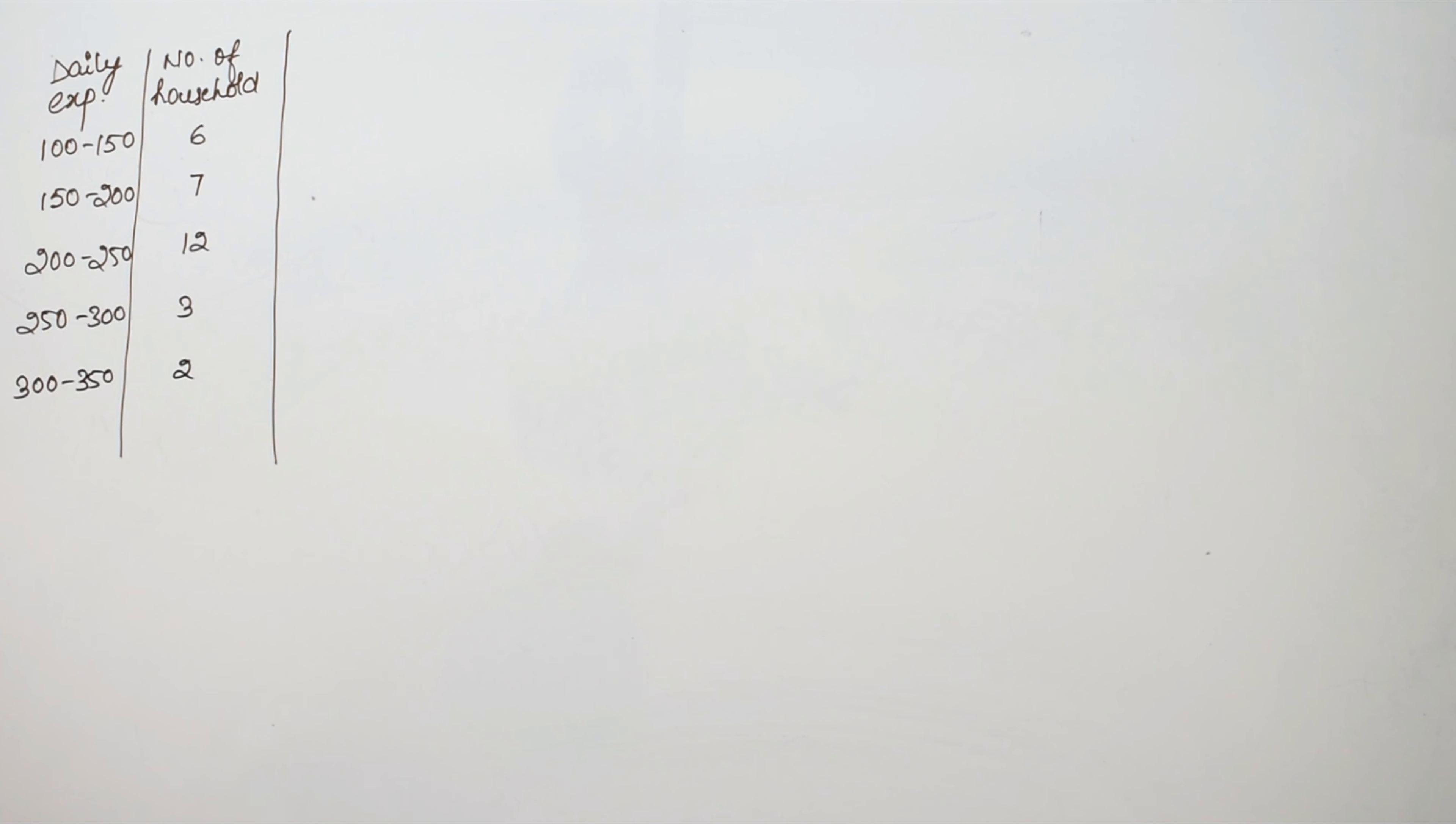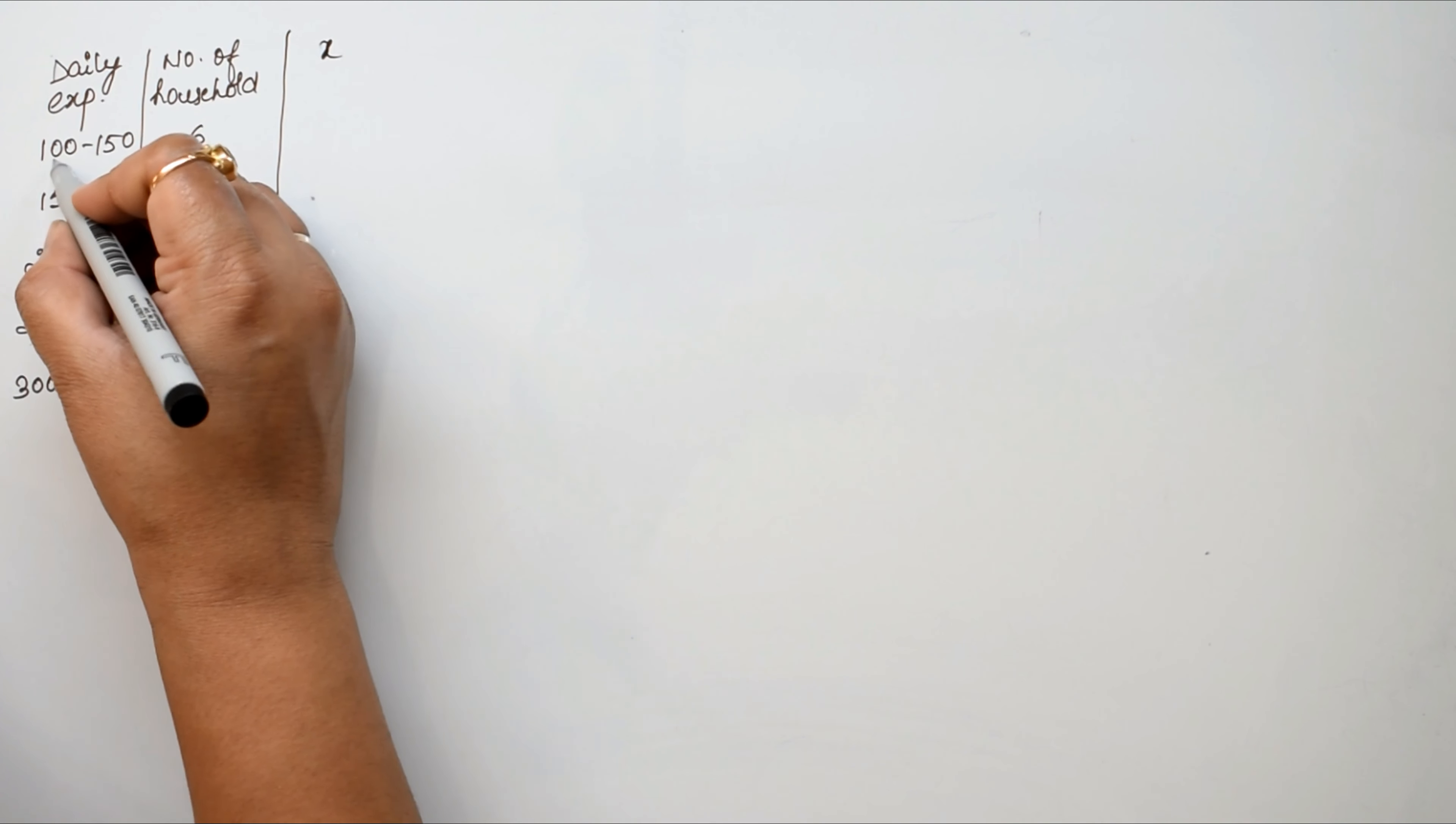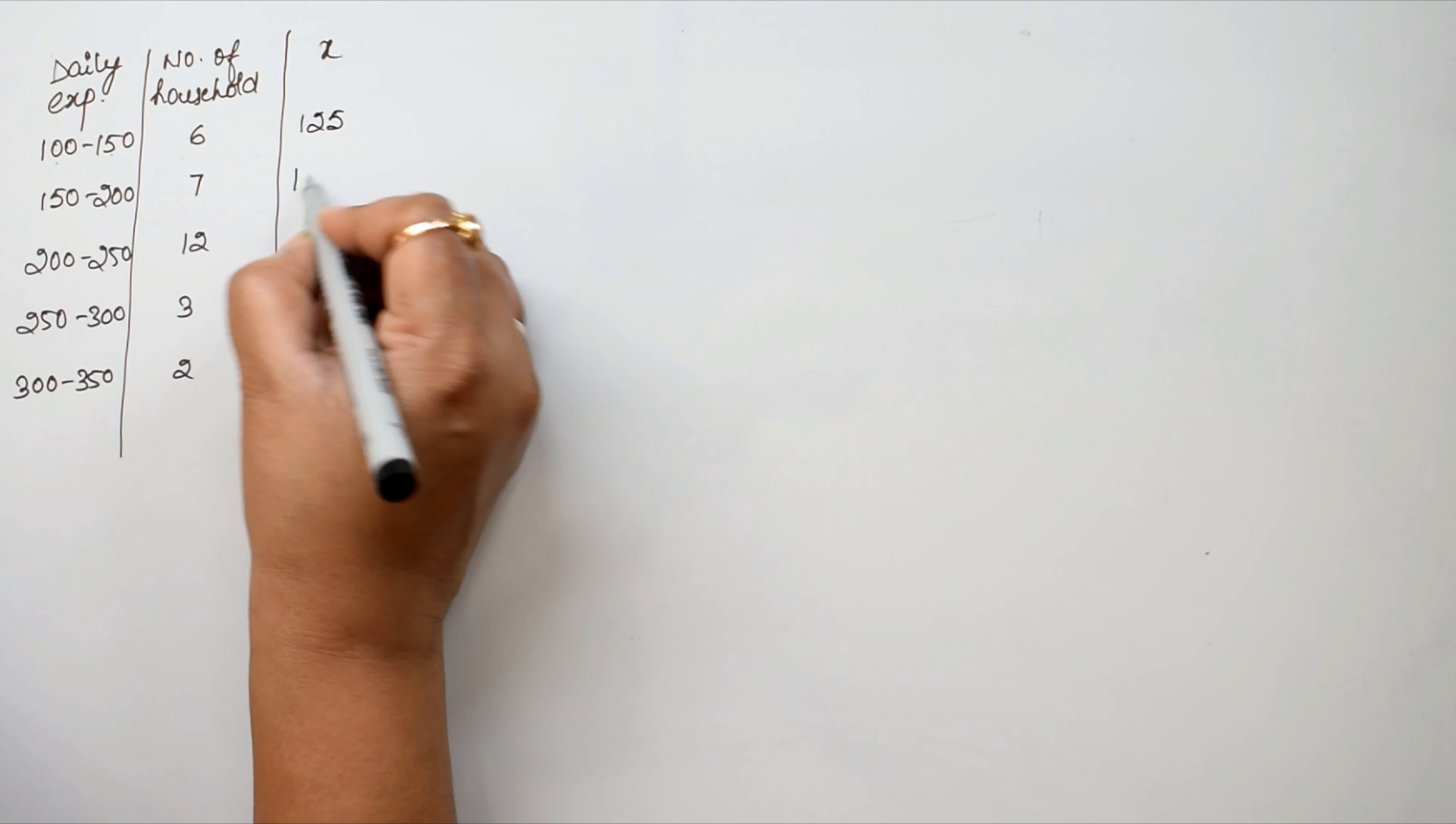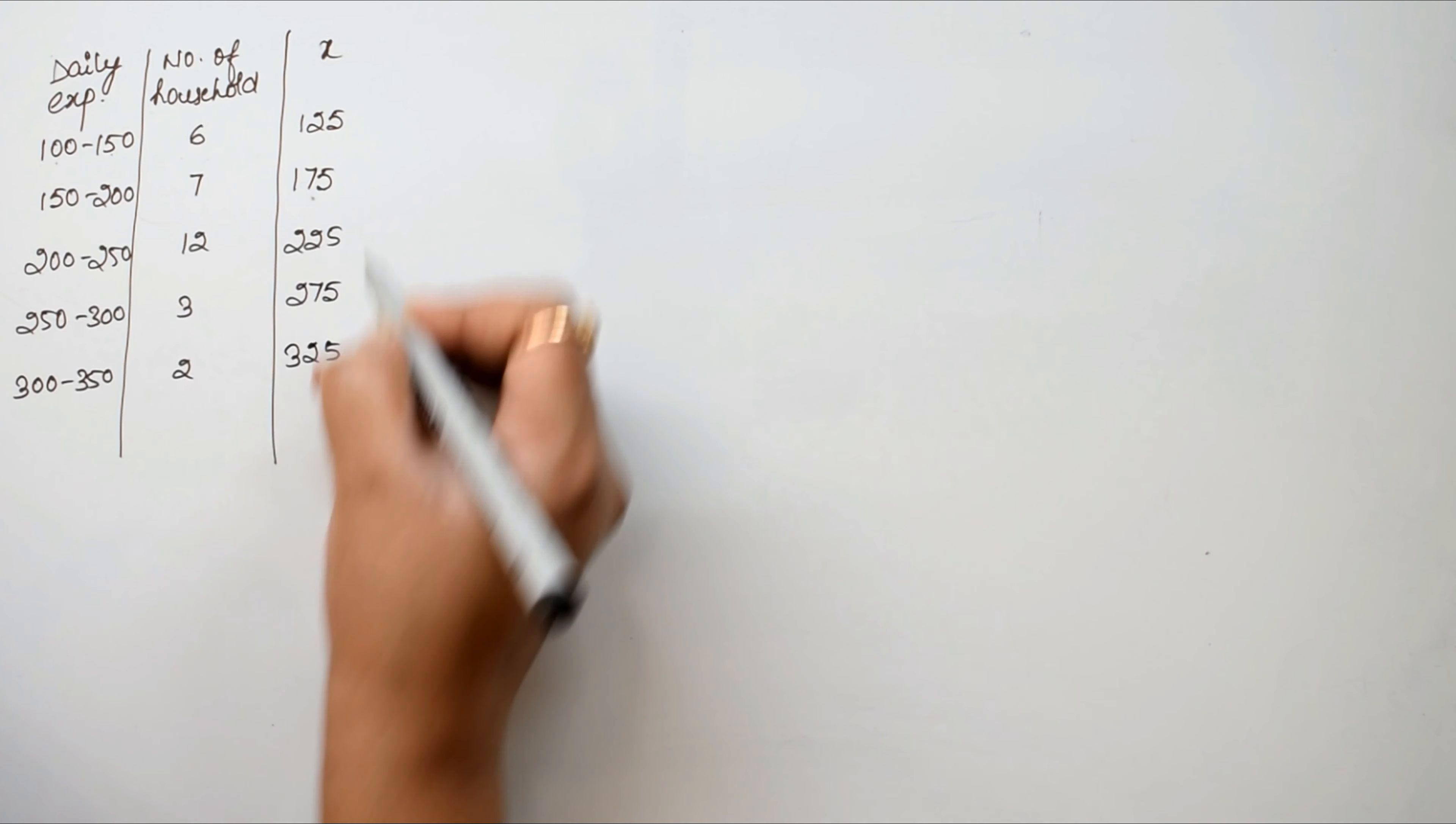The question asks: find the mean and median daily expenditure on food. For mean calculation, we need the mid-values. The mid-value is this plus this divided by 2. So we get 125, 175, 225, 275, and 325.